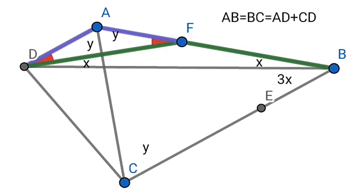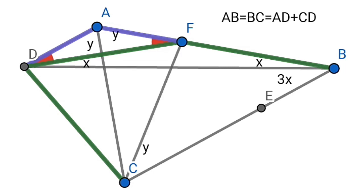So BF would be equal to CD. BF is equal to DF, which is also equal to CD. Because AB is equal to AD plus CD, that is AF plus BF. So BF is equal to DC, which is also equal to DF. Then, join the line CF.